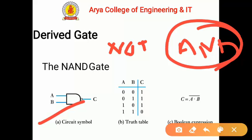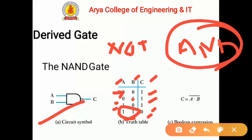You can see the symbol diagram of the NAND gate, and from the truth table: if both inputs are 0 then the output is high; if A is 0 and B is 1 then the output is again high; if A is 1 and B is 0 the output is again high; if both inputs are high then the output is 0. This is the complemented form of the AND gate. In the AND gate both inputs high gives high output, but in the NAND gate both inputs high gives a low output. The Boolean expression is C equals A·B, whole bar.